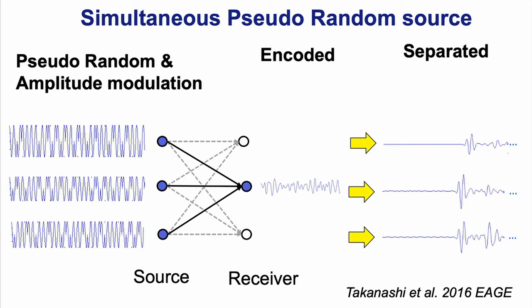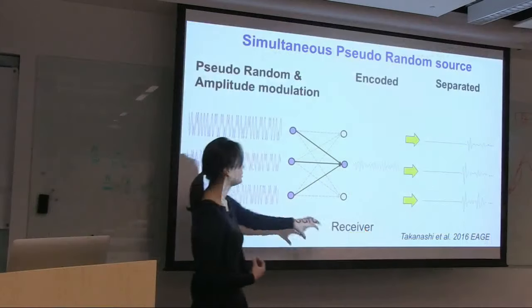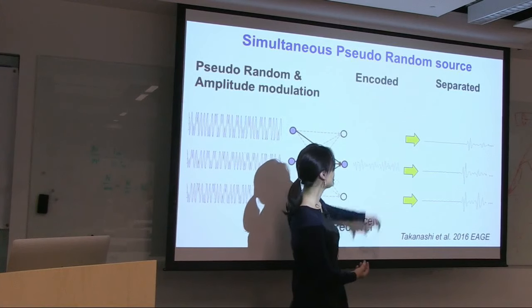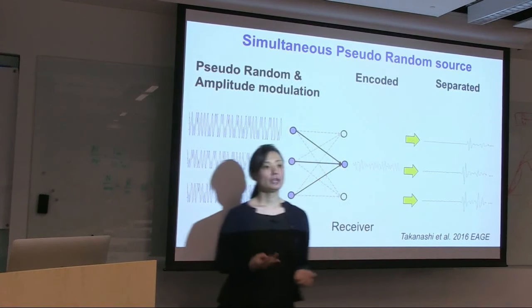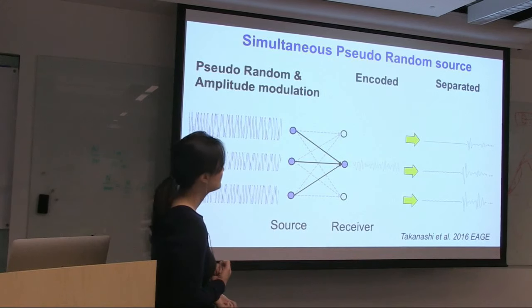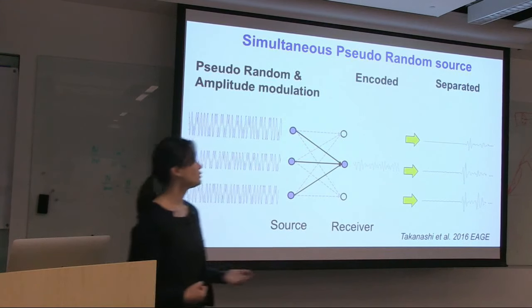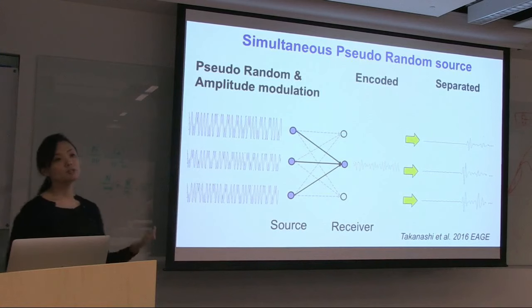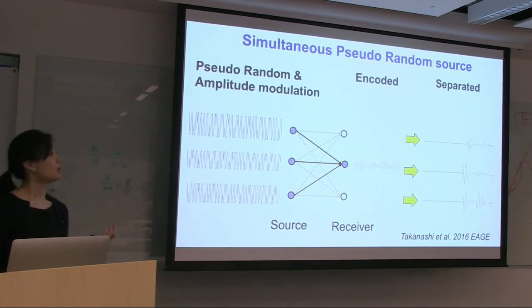Three different random sweeps with different amplitudes are mixed and excited together, so the receiver captures the combined effect of all three sources. After decoding, you can separate them into three individual source records, with very small crosstalk between sources.